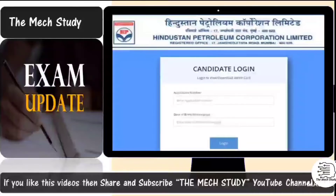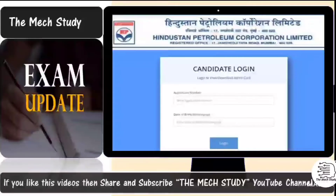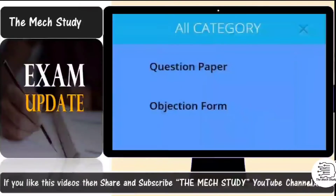You need to log in with your credentials on the official site where you can see your marks and score. Once you log in, you need to select two options — one is the question paper and the other is the objection form.